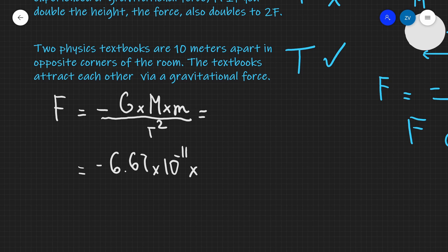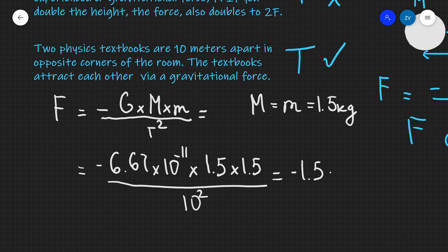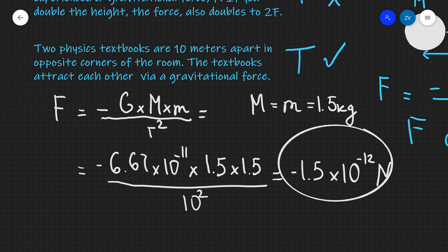Let's estimate the masses — say each textbook is 1.5 kilograms, so M equals m equals 1.5 kg, which is a reasonable estimate for a heavy physics textbook. We divide by the separation squared, which is 10 meters squared. Punching those numbers into a scientific calculator gives a force magnitude of 1.5 times 10 to the power of minus 12 newtons.